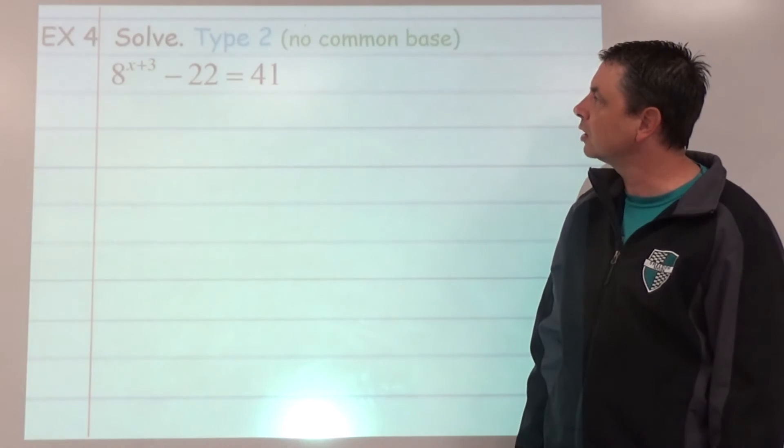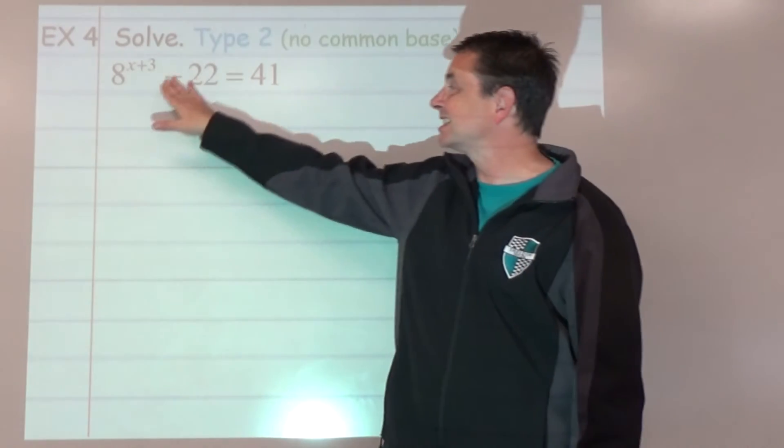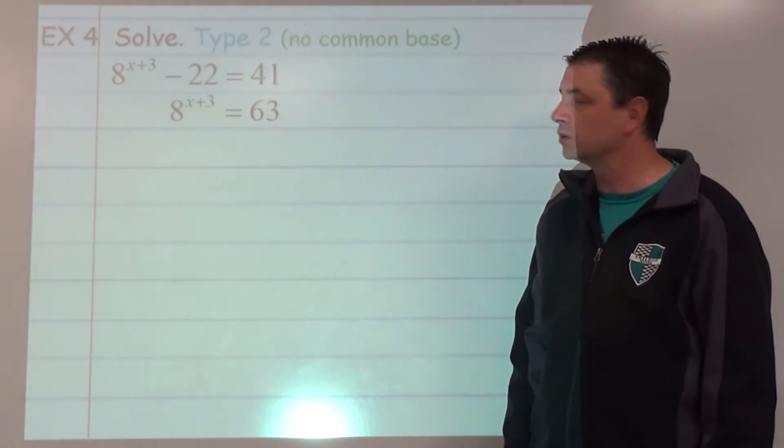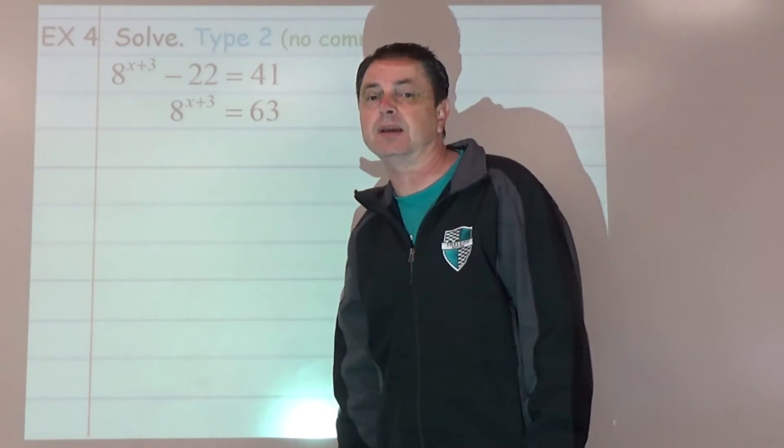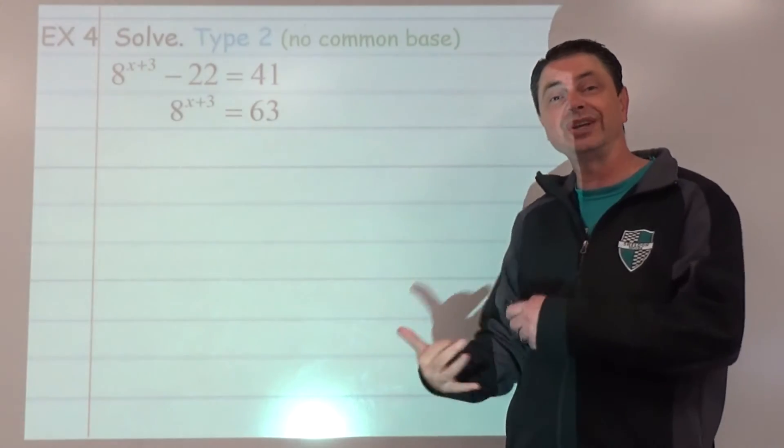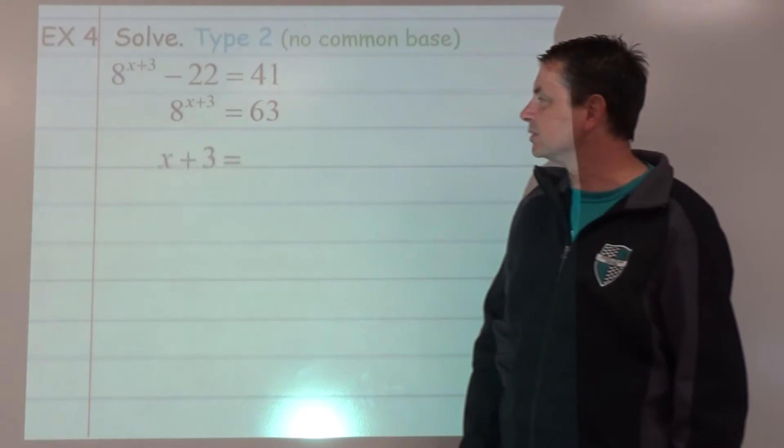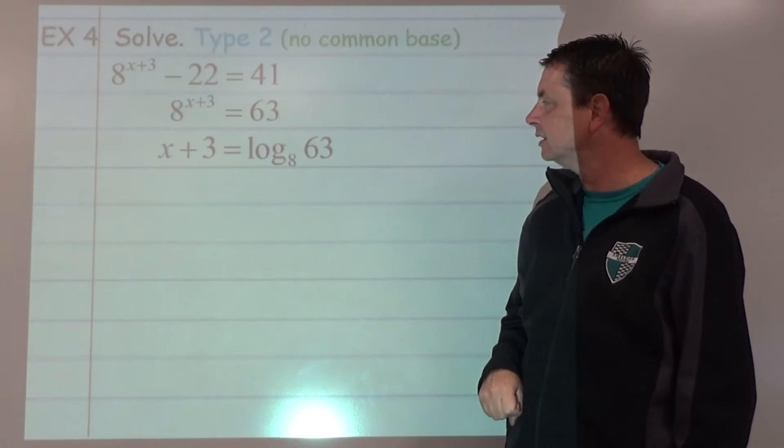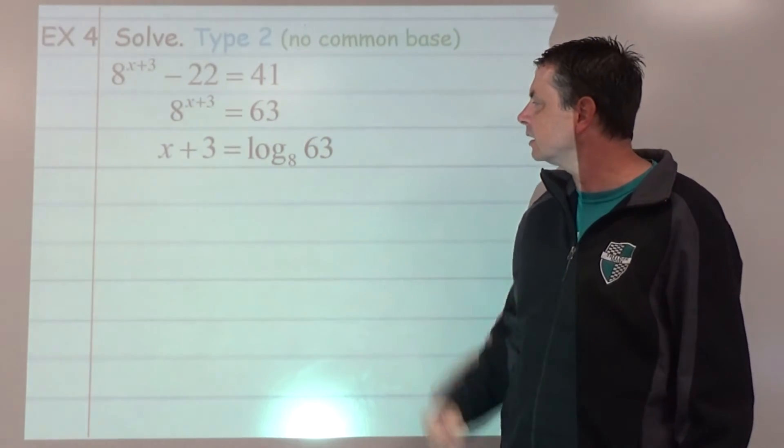Example number 4. Solve. Again, no common base. Before we get there, we need to isolate. Undo the minus 22. So we'll add 22 to both sides. Are 8 and 63 powers of the same number? They are not. So no common base. We're going to rewrite this by moving the base. So x plus 3 drops down. Log base 8 of 63. Can't simplify that. If that was 64, we'd know how to do that, but not 63.